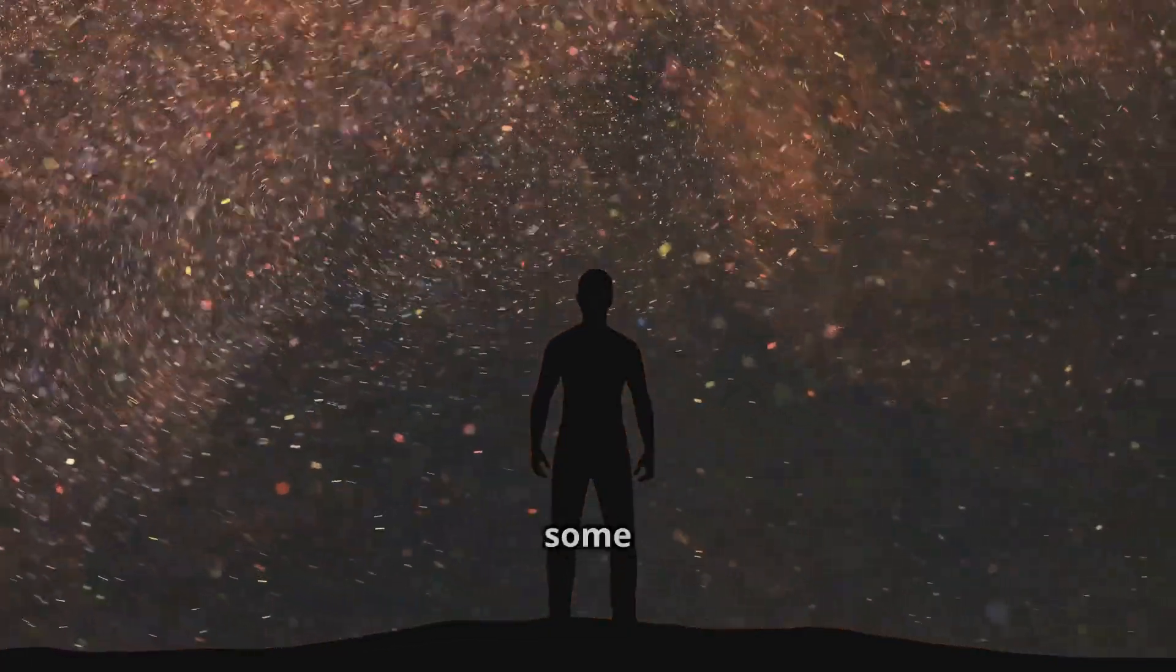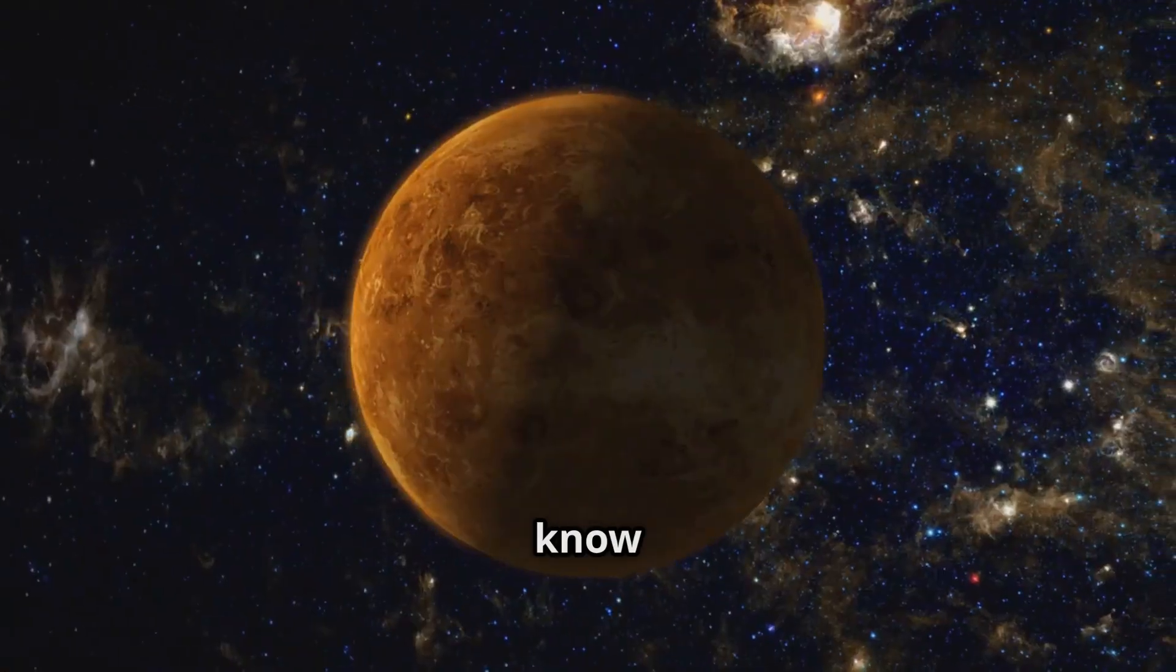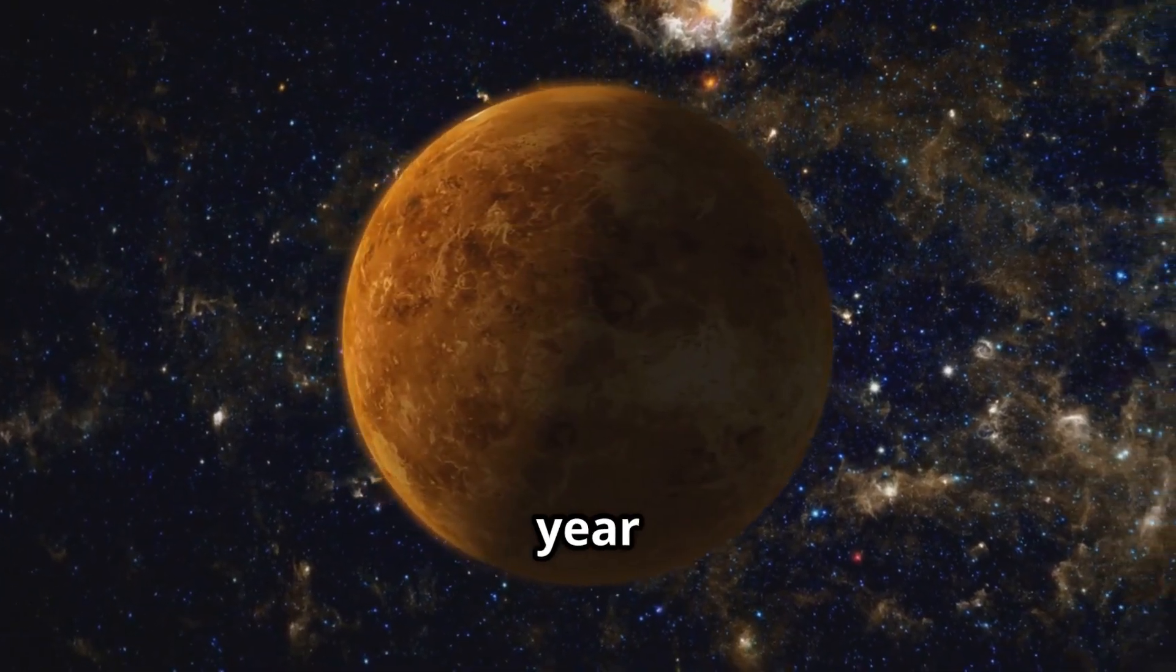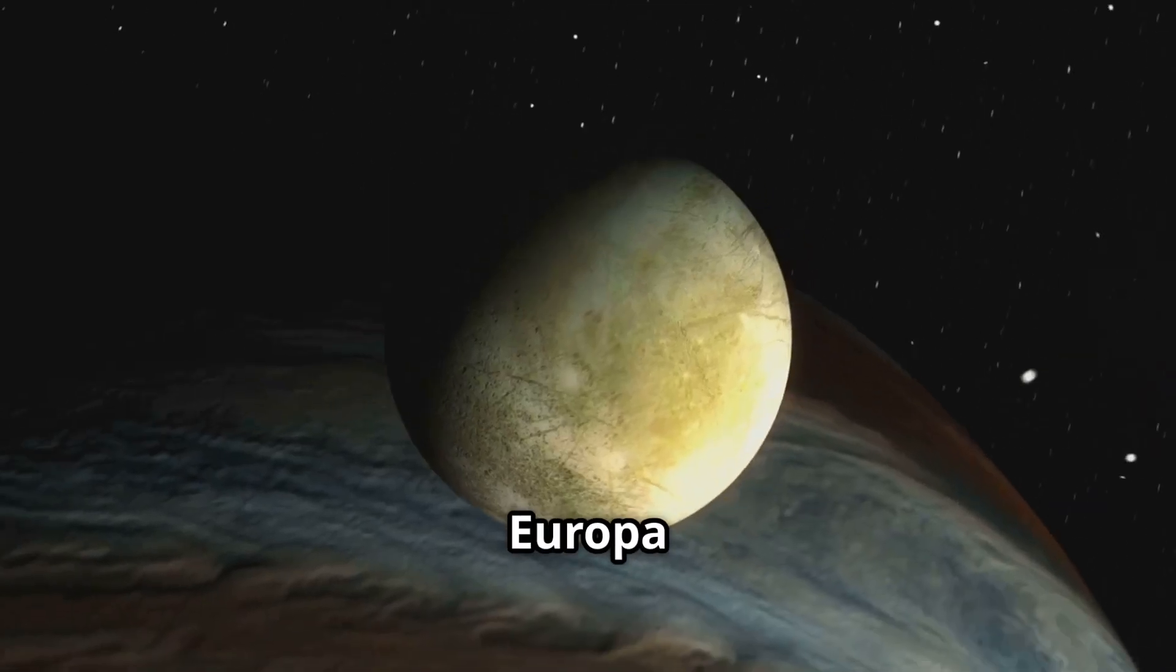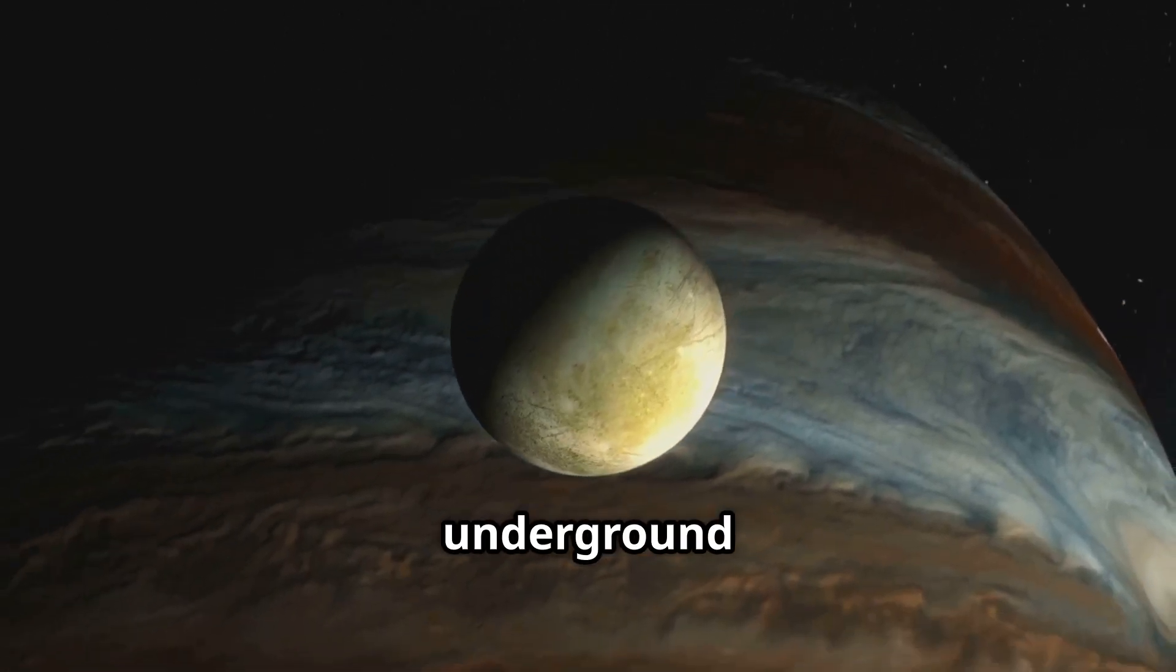Before we wrap up, let's do some cool space facts. Did you know a day on Venus is longer than a year on Venus? Saturn would float in water because it's so light! Jupiter's moon Europa might have alien life in its underground ocean.